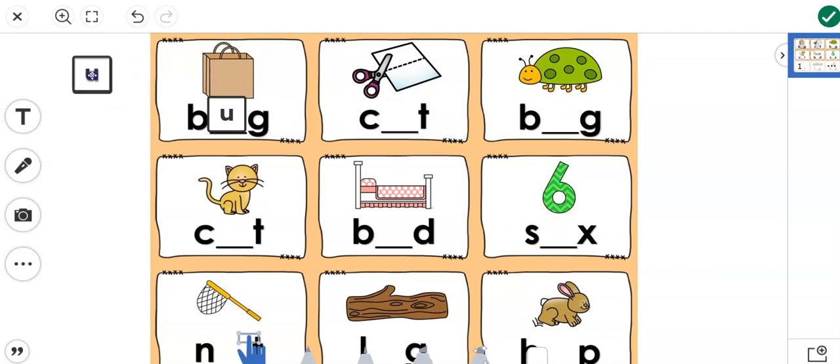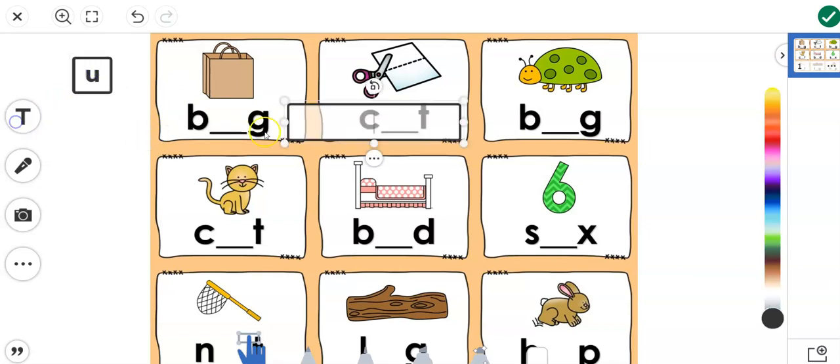So I would do that and then I would come here and I would create another letter. Again I want to put it right in there so I make sure it's the right size. This time I need some A's. So I'll go ahead and move it over here. I'll hit my three dots.